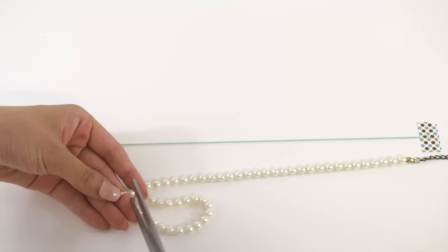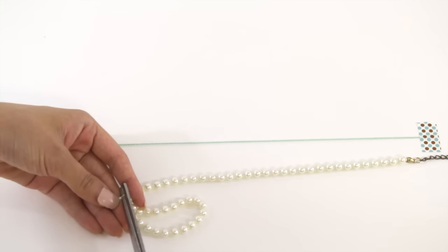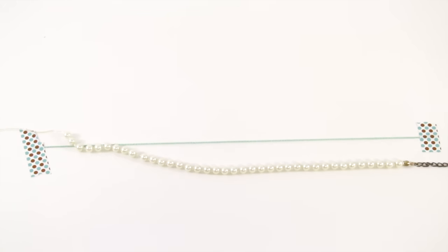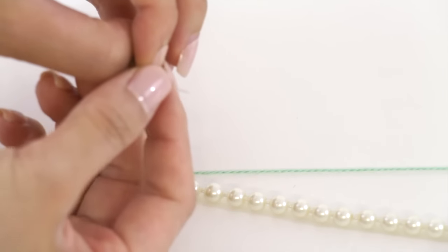I found a string of fake pearls that I really liked, so I just trimmed it to the circumference of my neck. I removed some pearls at the end just so that I had some string to work with, and then I just took a clasp and tied it off.